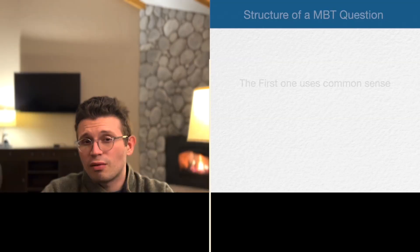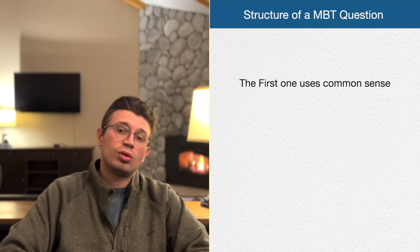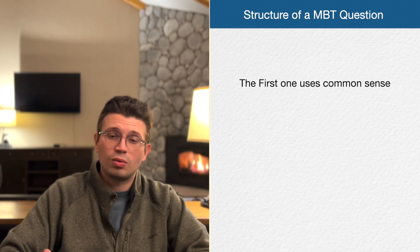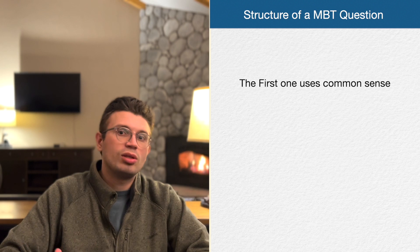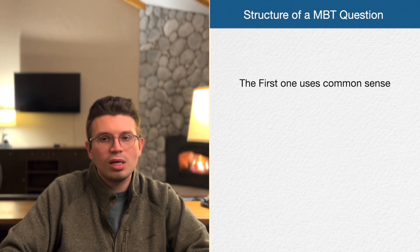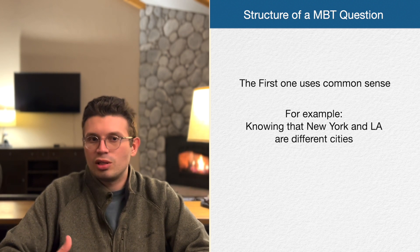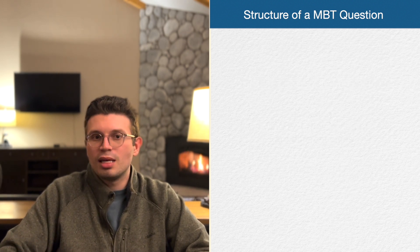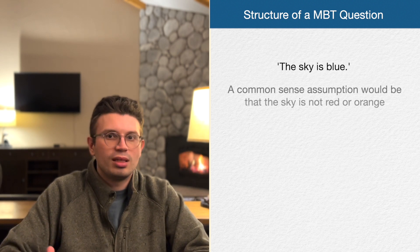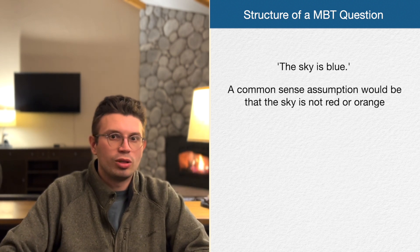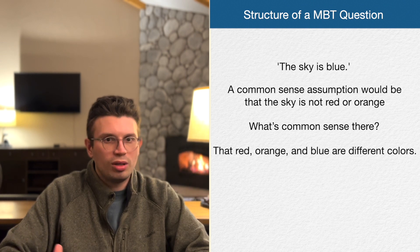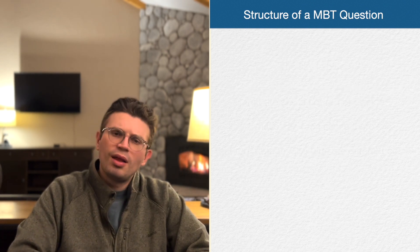There are four ways to prove an answer choice is definitely correct. The first is using common sense. Based on the LR section instructions, we're allowed to use common sense to assume things — like knowing that New York and Los Angeles are different cities. An example: if the sky is blue, a common sense assumption would be that the sky is not red or orange, because red, orange, and blue are different colors.